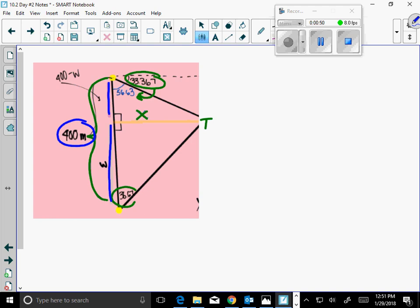So I've assigned a second variable. Let's work in the first triangle up here. Let's work this one out first, and let's solve for X. So over here, I would use my angle 56.63, and I'd take the tangent of that angle is equal to the opposite over the adjacent, which would be 400 minus W.